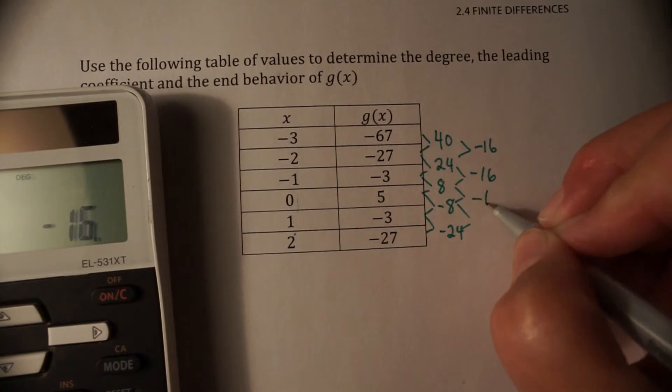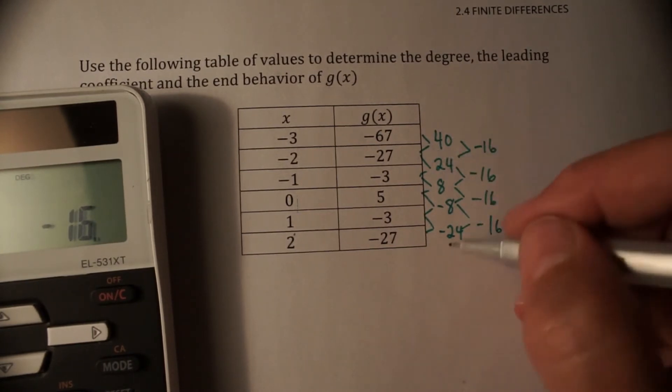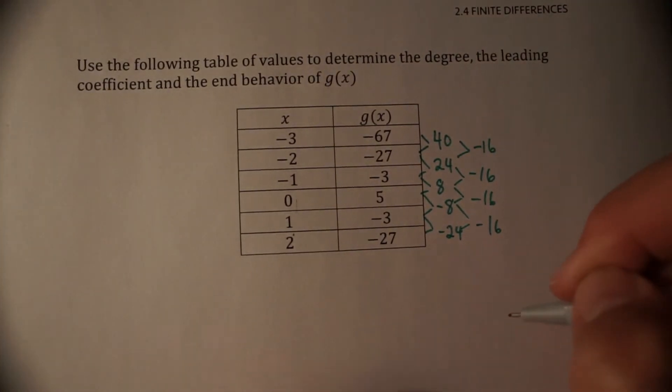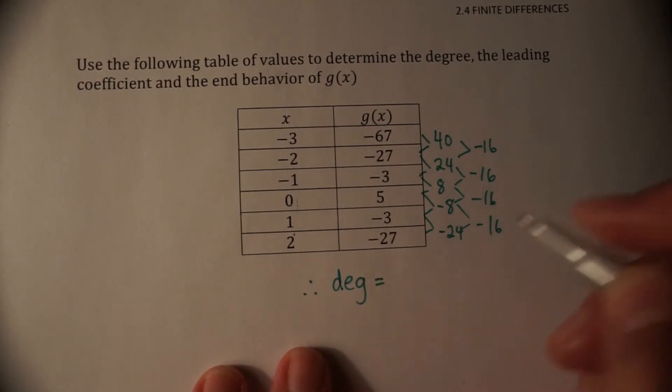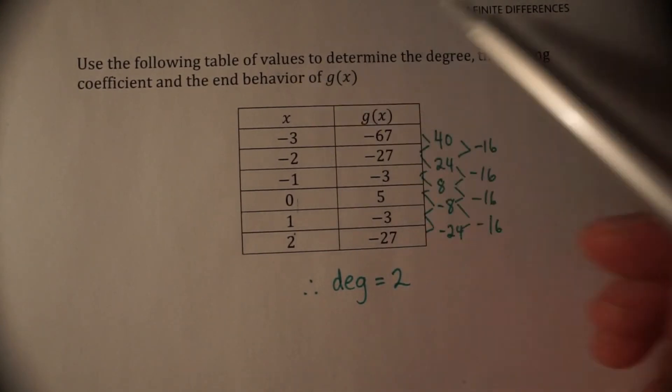Yep, that's negative 16. And then negative 16. Okay, so that only took us two sets of finite differences to get our constant finite difference. So we say, therefore, the degree of the polynomial is 2, because it took us two times to get that constant finite difference. So that's the first part of the question.